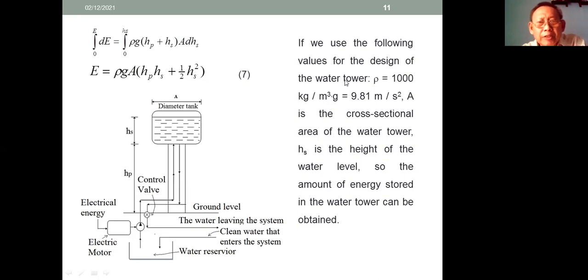If we use the following values for the design of the water tower: ρ is 1,000 kg per meter cubed, G is 9.81 meter per second squared, A is the cross-sectional area of the water tower, HS is the height of the water level, so the amount of energy stored in the water tower can be obtained.